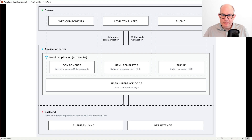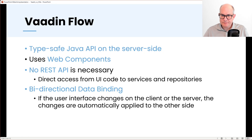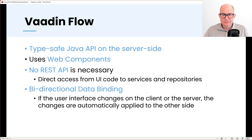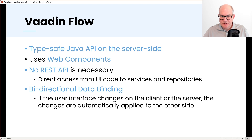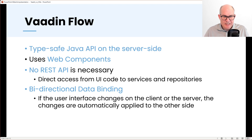With that model you develop your entire web application in Java — you don't need to write any TypeScript or JavaScript code. Vaadin Flow is for type-safe Java APIs on the server side; it uses web components, the same web components you will use with Hilla. There is no REST API because you don't need to care about the communication between client and server. And you have bidirectional data binding: if the user changes a field on the client it gets propagated to the server, and if you set a value on the server it gets propagated to the client.